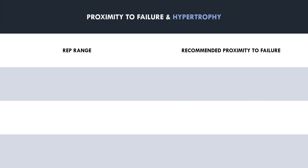Rep ranges and loads also influence appropriate proximity to failure. When training in the 5-10 rep range, hypertrophy can be maximised training slightly further from failure since all motor units are recruited with heavier loads earlier in the set — around 2-4 reps in reserve, or RPE 6-8, is appropriate. In the 10-15 rep range, training slightly closer to failure is necessary as all muscle fibres won't be significantly involved from the start — around 1-3 reps in reserve, or RPE 7-9. In the 15-plus rep range, training closer to failure is even more important to ensure all motor units are recruited, with an appropriate range of 0-2 reps in reserve, or RPE 8-10.